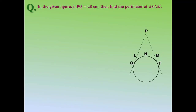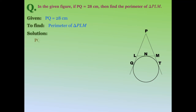The next question: in the given figure PQ is 28 cm. Find the perimeter of triangle PLM. We are given PQ as 28 cm. PQ and PT are two tangents from external point P, so their lengths are equal and PT is also 28 cm.